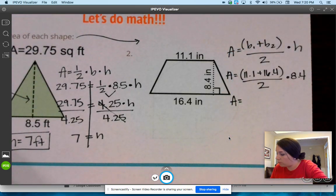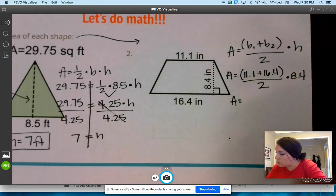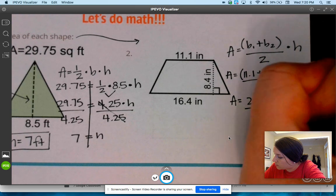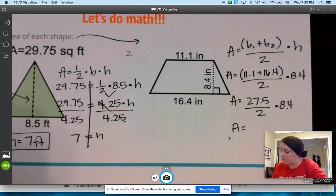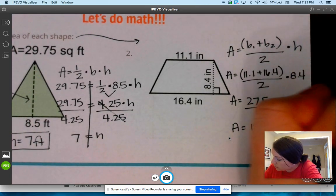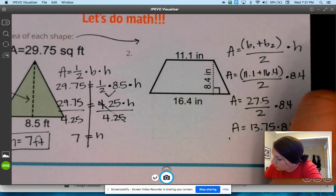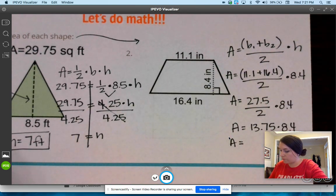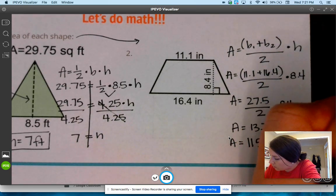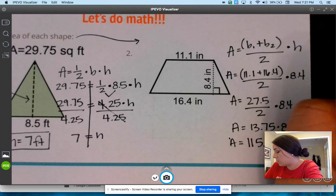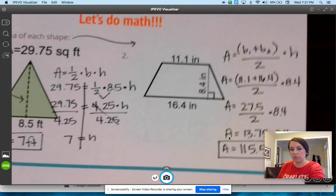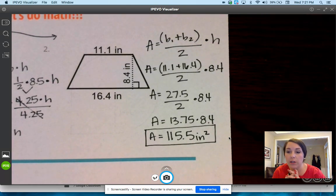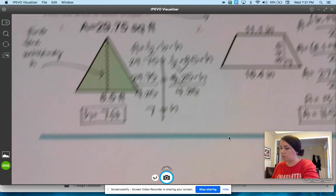And then we're just going to solve. So 11.1 plus 16.4, 27.5, divided by 2, times 8.4. Do this dividing first. 13.75 times 8.4. 115.5 inches squared. Again, when you're working with area, make sure it's all... oh, you can't see it. My face is in the way. Make sure that your units are squared because we are working with area or a 2D figure, a 2D shape, two dimensions.